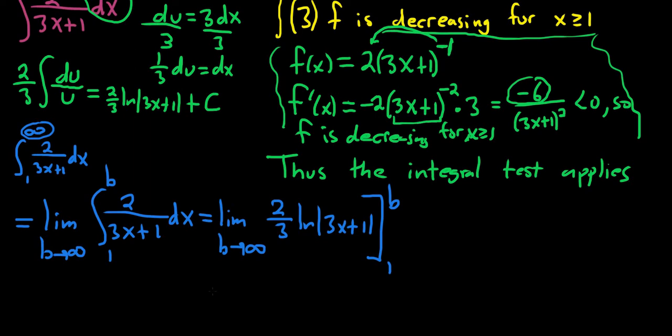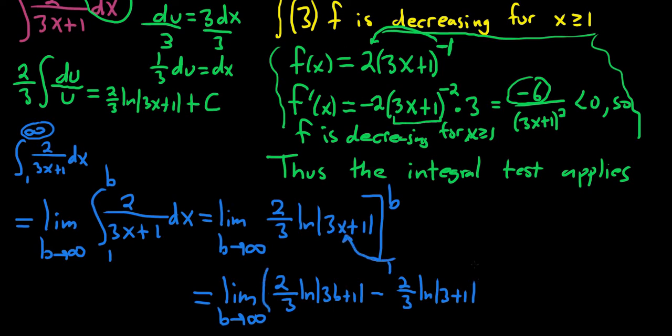As usual, we plug in the b first. So this is equal to the limit as b goes to infinity of 2/3 ln(3b+1) minus 2/3 ln(3+1). 3 times 1 is plugging in 1. We get 3. And this limit is equal to infinity.